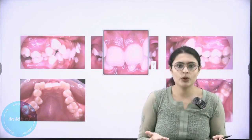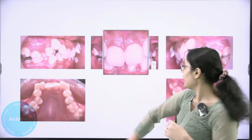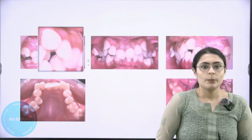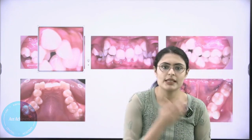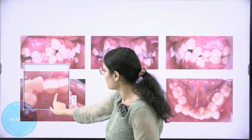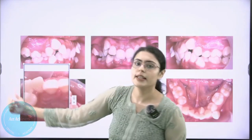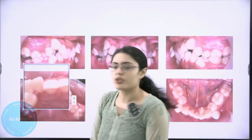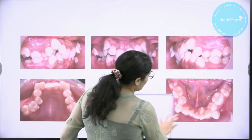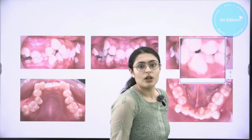Then there is labioversion or linguoversion. A tooth in labioversion is present labially — like this lateral incisor, which is in labioversion. Linguoversion means the tooth is present lingually — like the maxillary incisors. Comparatively, the lateral is in labioversion and the maxillary centrals are in linguoversion. His last term was torsiversion, which means the tooth is rotated — like this premolar here, which is in torsiversion, meaning it has a rotation.